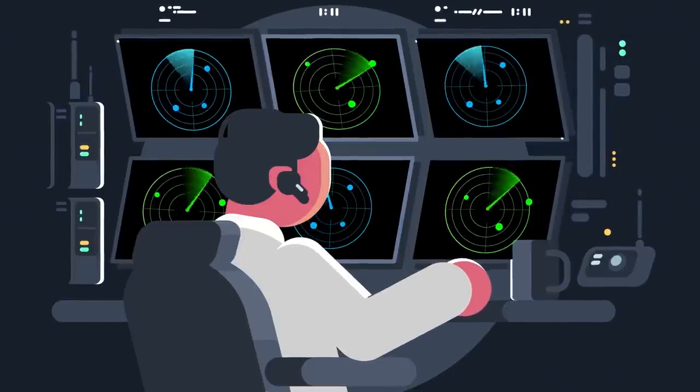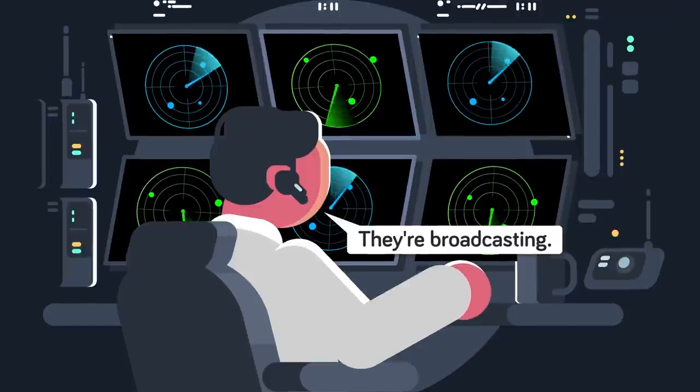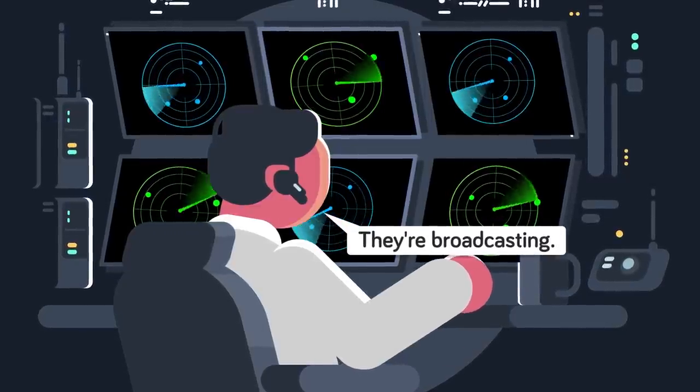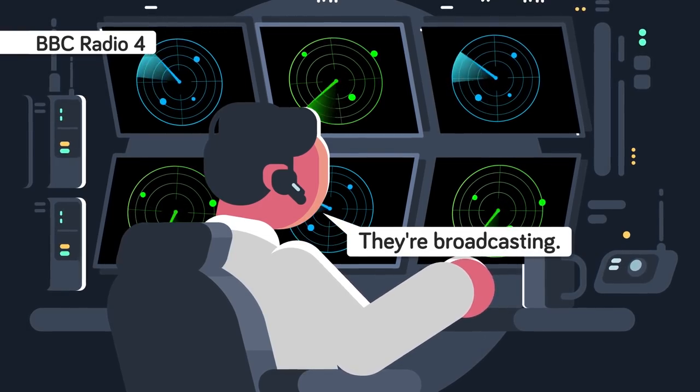30. In case of global nuclear war, one of the ways the British nuclear submarine fleet checks to see if the British government is still functioning is to see whether BBC Radio 4 is still broadcasting or not.